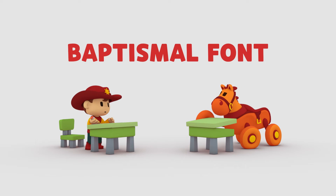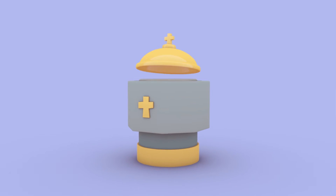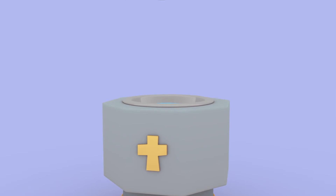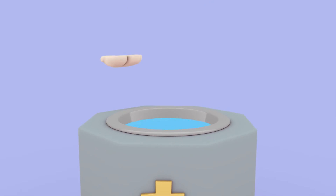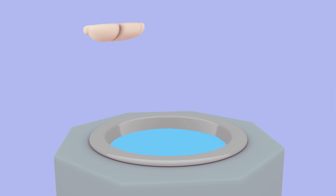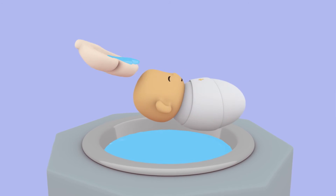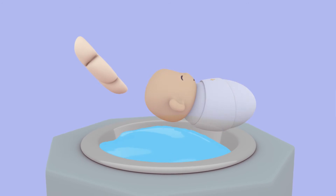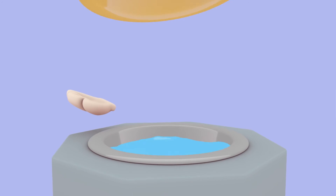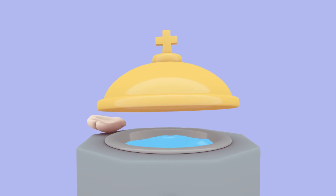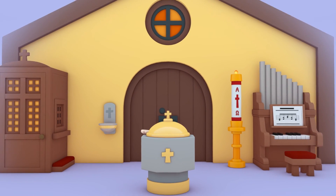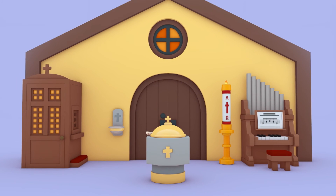Right again, Blaze. A baptismal font is like a bowl that is supported by a base or column. It receives the water that is poured over the head of the person to be baptized. We are washed clean from original sin and become Christians through baptism.